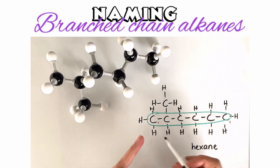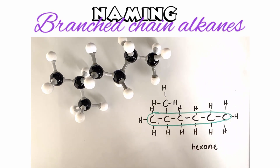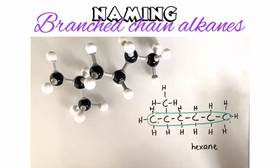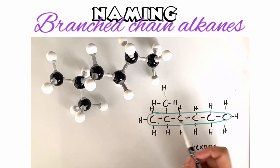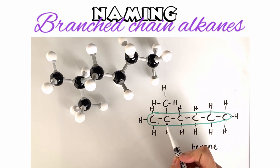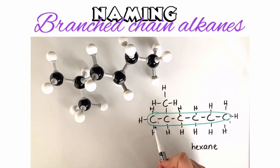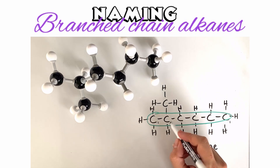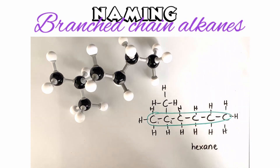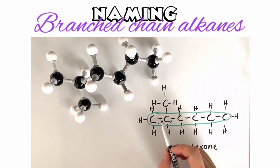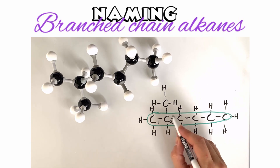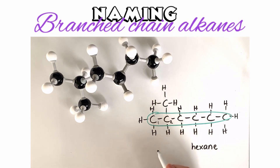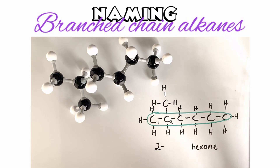The way we number them is to make it so that the carbon that has the branch on it has the lowest number. If we started from one end, the branch would sit on carbon five. If we start from the other end, the branch sits on carbon two — that is the lowest possible number. So we number it C1, C2, and carbon two has the branch.